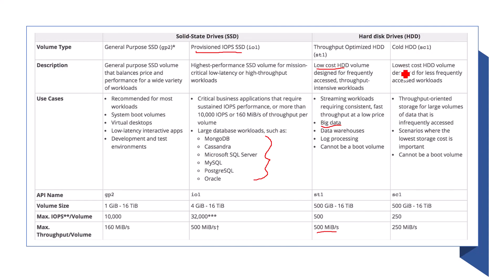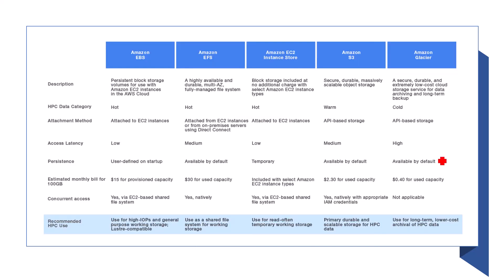The last option is Cold HDD, which is the lowest cost HDD type. However, it has much lower throughput and very limited IOPS. It is very cheap and should be used when lowest storage cost is the top priority and high throughput is not required.